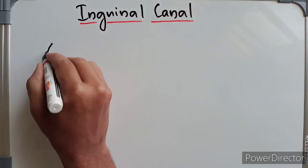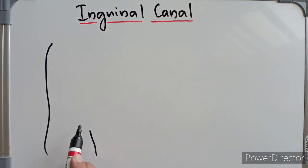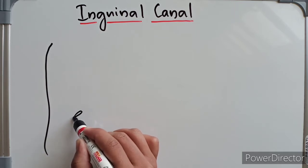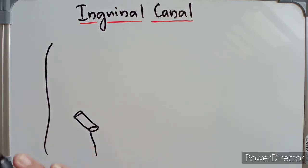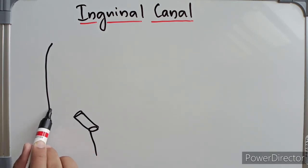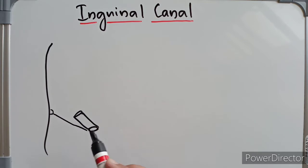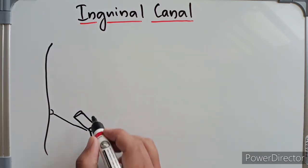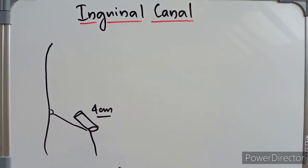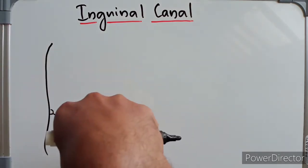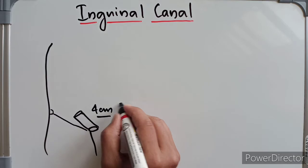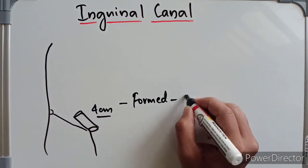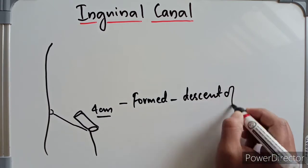The inguinal canal is situated in the lower part of the abdomen. It is an oblique intramuscular passage in the lower part of the anterior abdominal wall. It lies parallel to the middle half of the inguinal ligament, which runs from the anterior superior iliac spine to the pubic tubercle. It is four centimeters long and directed downwards, forwards, and medially. It is formed due to the descent of the testis and ovary during uterine life.